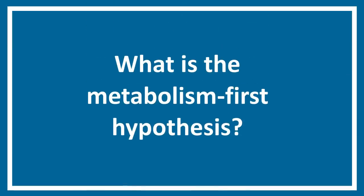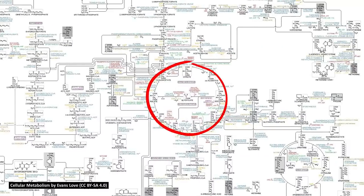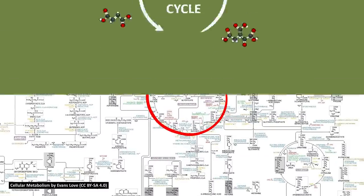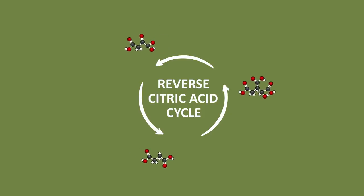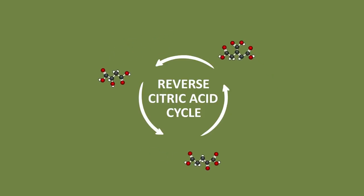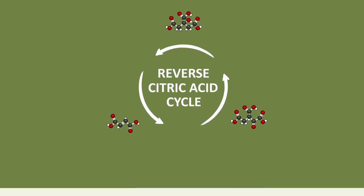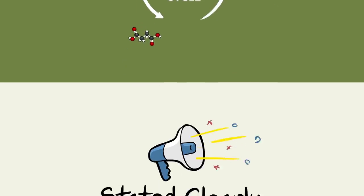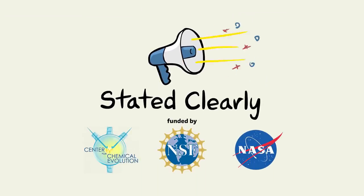What is the metabolism-first hypothesis? There are actually several. Some are focused on autocatalytic sets, others on metabolic fossils. All are based on the simple idea that some aspect of modern metabolism existed naturally in the environment before genes and before proteins. I am John Perry, and that is an overview of metabolism-first hypotheses, stated clearly.